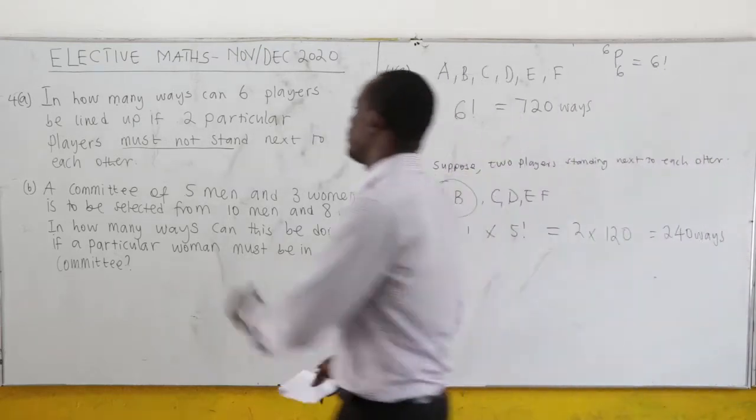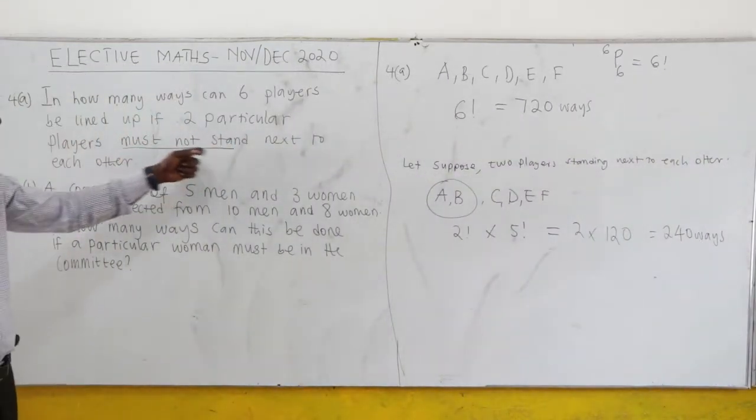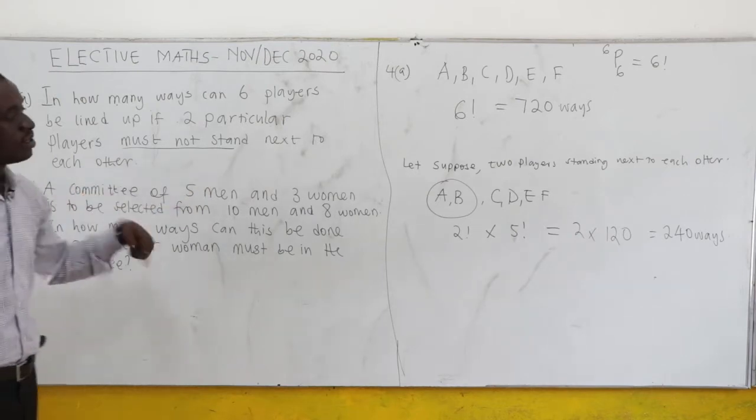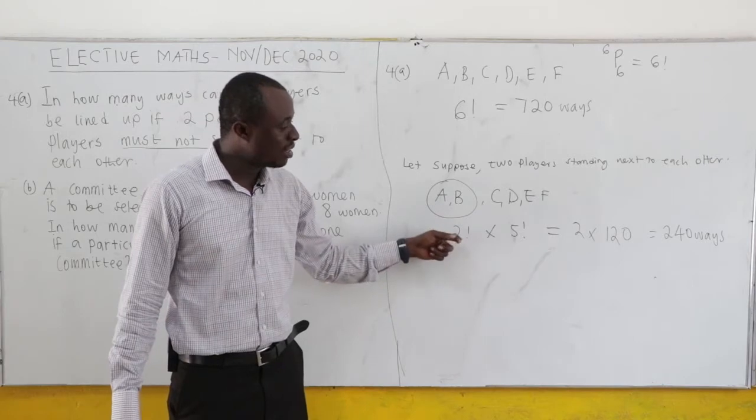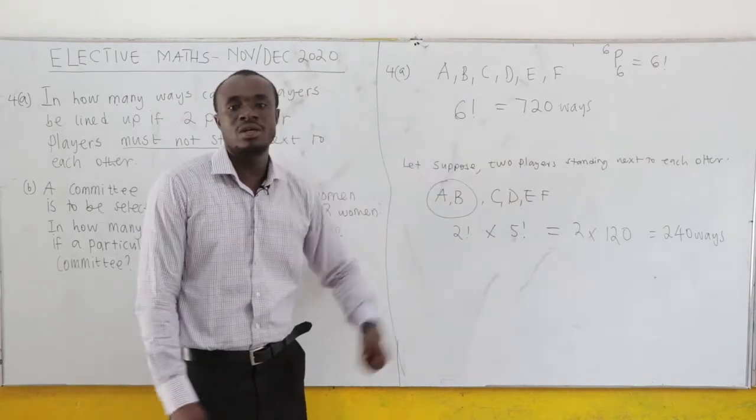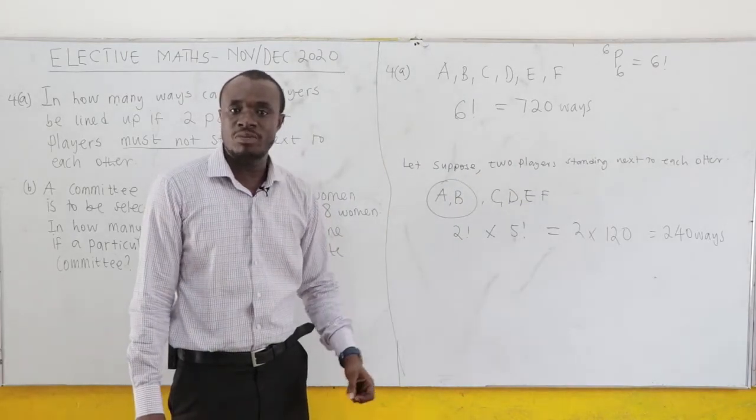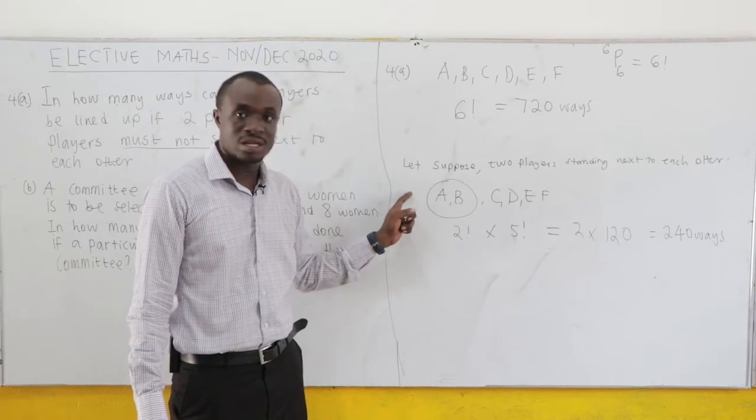Now the question says that in how many ways can 6 players be lined up if 2 particular players must not stand next to each other. So this is condition of them standing next to each other. So when you take this one, that is 240, from the 720, then we would get 2 particular players not standing next to each other. Because this is the condition that 2 players will stand next to each other. So when you subtract this from this, it would be the number of ways that 2 particular players will not stand next to each other.